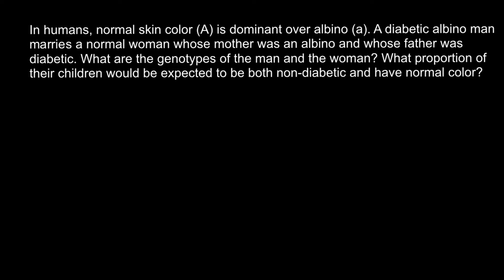For example, in identical twin studies, scientists have found — and there are two types of diabetes — that in diabetes type 1, identical twins that are genetically 100% identical, only 50% of the other twins develop the same condition. As for diabetes type 2, this type has a stronger genetic influence, but still 25% of twins didn't develop it when the other one did. So as you can see, there is very strong environmental influence.